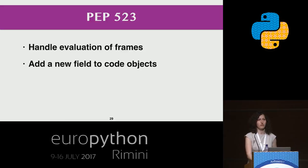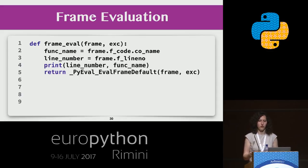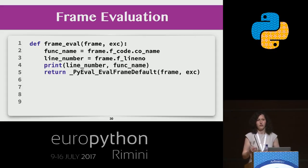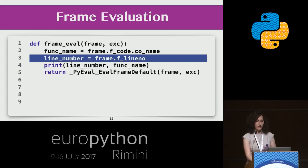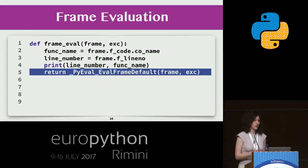It sounds a bit tricky, but let's consider an example. We will write a custom frame evaluation function. This is a C API, so you need to write a C extension to use it — for example, a CPython extension like we do in PyCharm. For better readability I'll use Python, but this code is actually written in C. Our custom frame evaluation function takes two arguments: a frame object and an exception flag. We can get the name of the current function and the line number of the frame, print this information, and then call the default frame evaluation function.